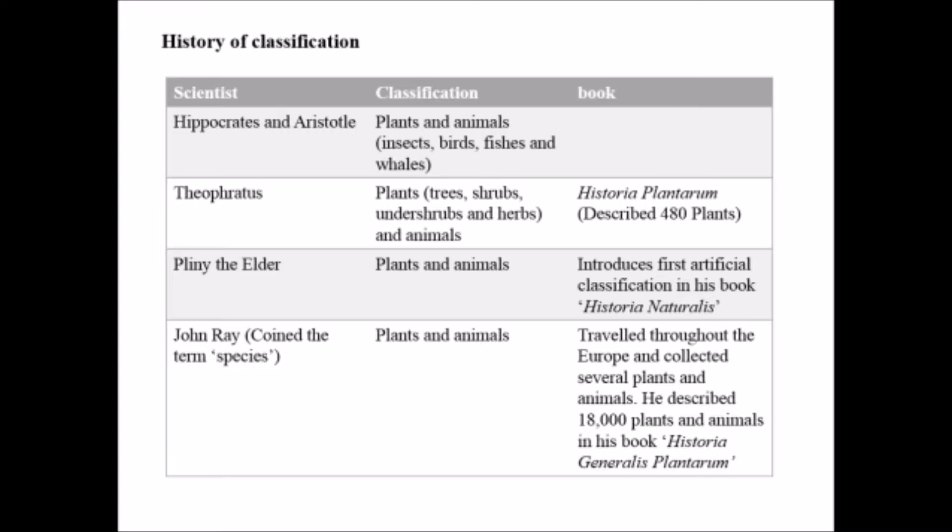Pliny the Elder also followed the same classification and he was the first to write the first artificial classification in his book Historia Naturalis. John Ray also coined the term species and followed the same pattern of classification and traveled throughout Europe.